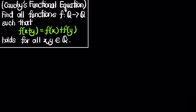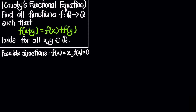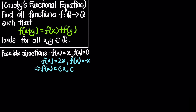To begin solving this functional equation, you can try to guess some solutions. Functions that satisfy this additivity include f(x)=x (the identity function), the zero function, f(x)=2x, and f(x)=-x. So you can think that the possible functions are of the form f(x)=cx where c is a rational number. Our goal is to prove that the only solutions are indeed all such linear functions.